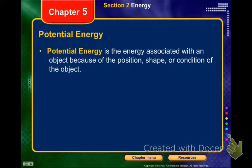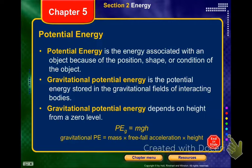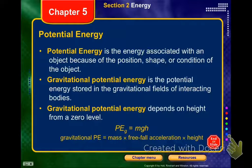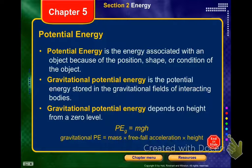Moving on from kinetic energy to potential energy. We're going to have a couple different types of potential energy. Potential energy is energy based on an object's position, shape, or condition. The first type we're going to look at is gravitational potential energy — stored in the gravitational fields of interacting bodies. It depends on the height of your object from whatever you consider to be your zero level. The equation is PEg equals mgh — mass times free-fall acceleration (9.81) times height.